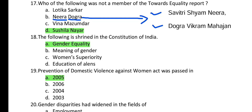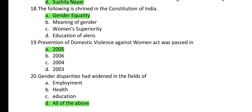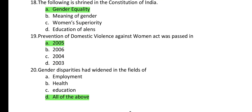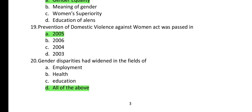Question 18: What is enshrined in the Constitution of India among the given options? The answer is gender equality. Question 19: When was the Prevention of Domestic Violence Against Women Act passed? It was passed in the year 2005.